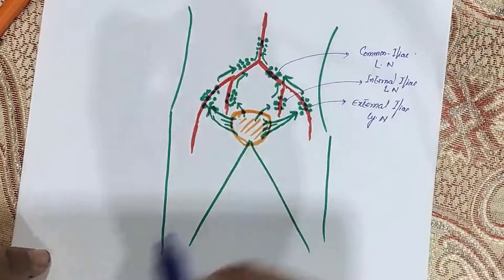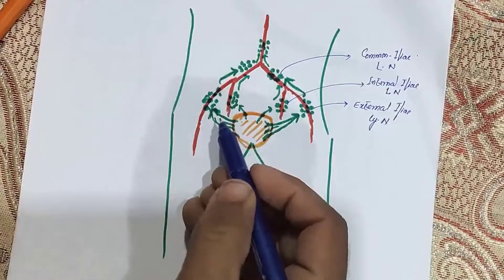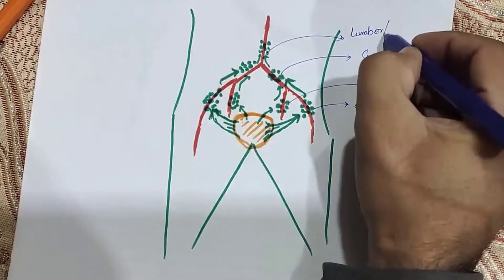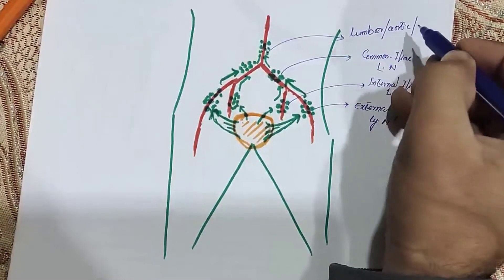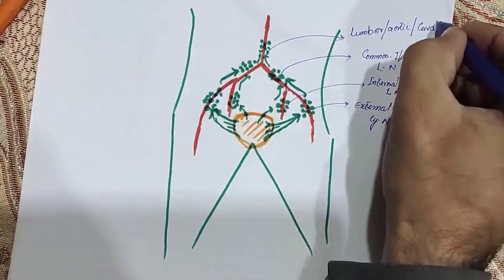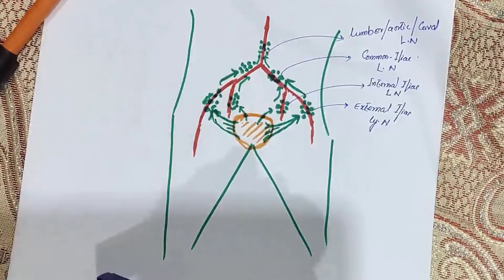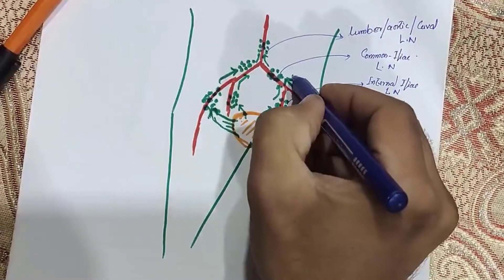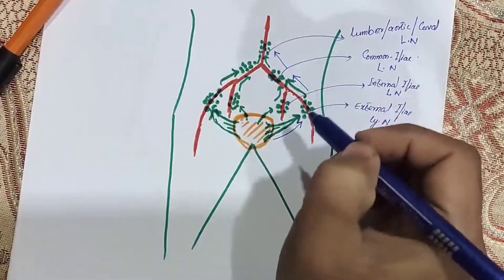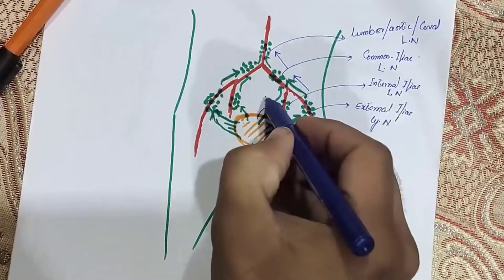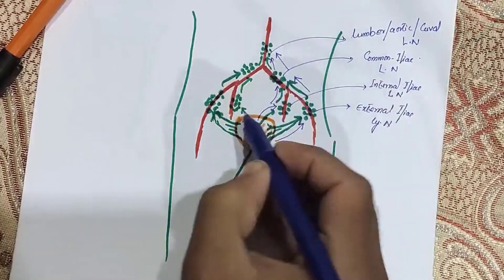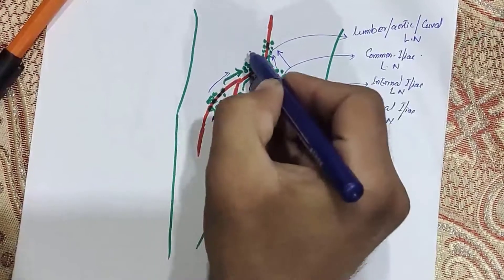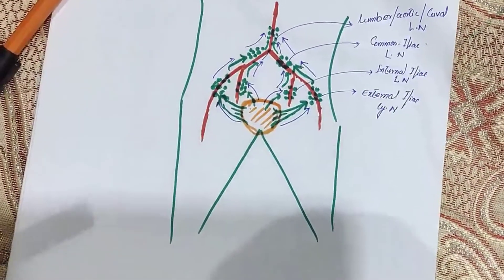The same drainage pattern applies to both sides. The final group is referred to as the lumbar, aortic, or caval lymph nodes at the lumbar region. So the lymph flow from the urinary bladder goes: urinary bladder → external iliac nodes → common iliac nodes → caval/aortic/lumbar nodes. Some lymph also moves via the internal iliac nodes → common iliac nodes → the same final destination.